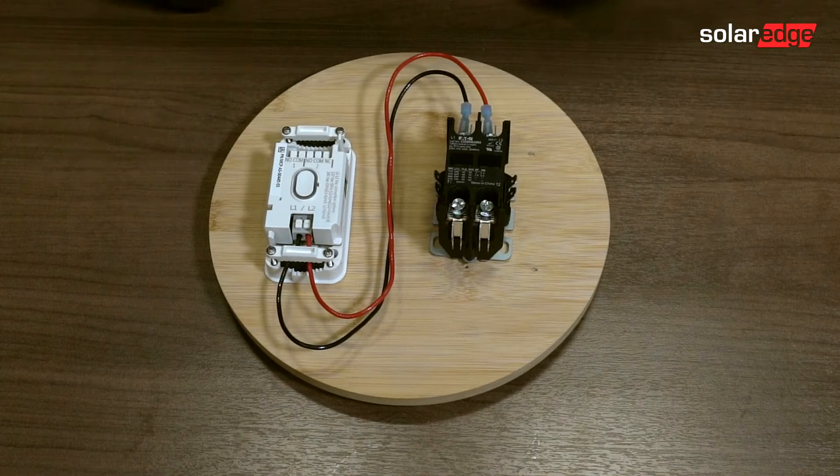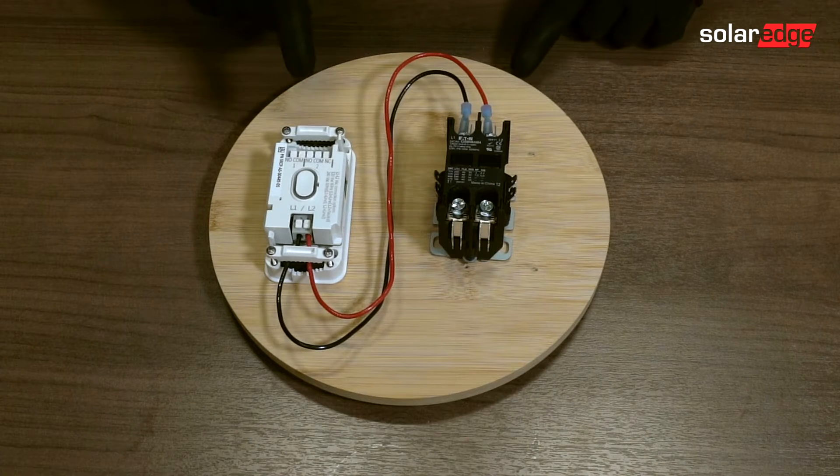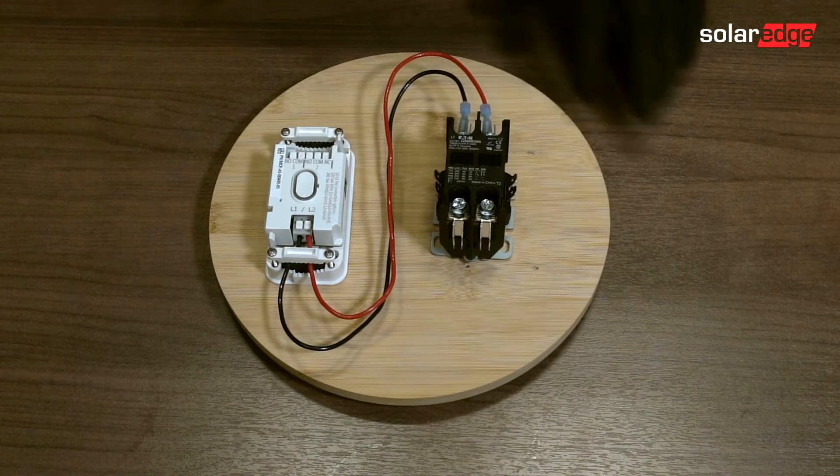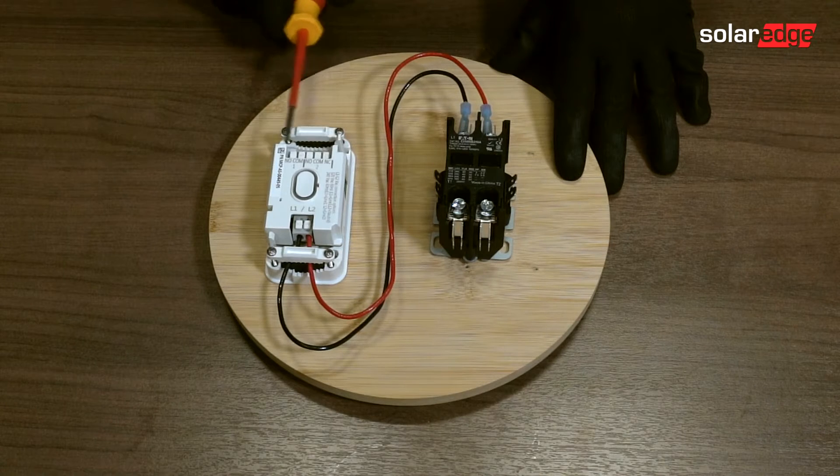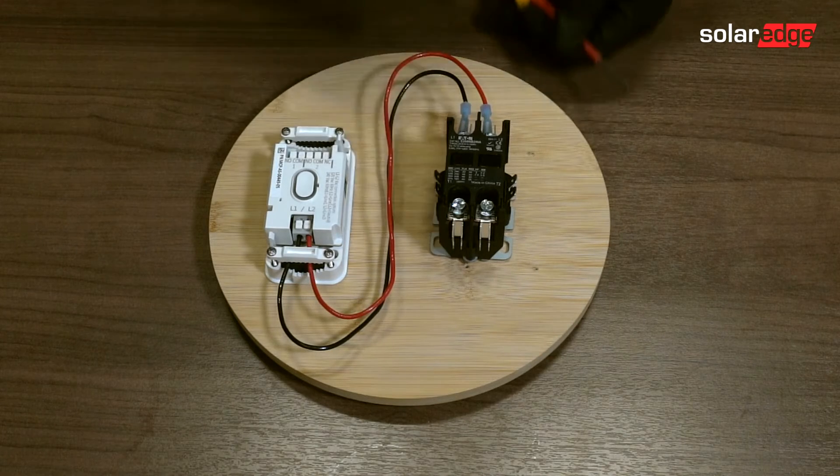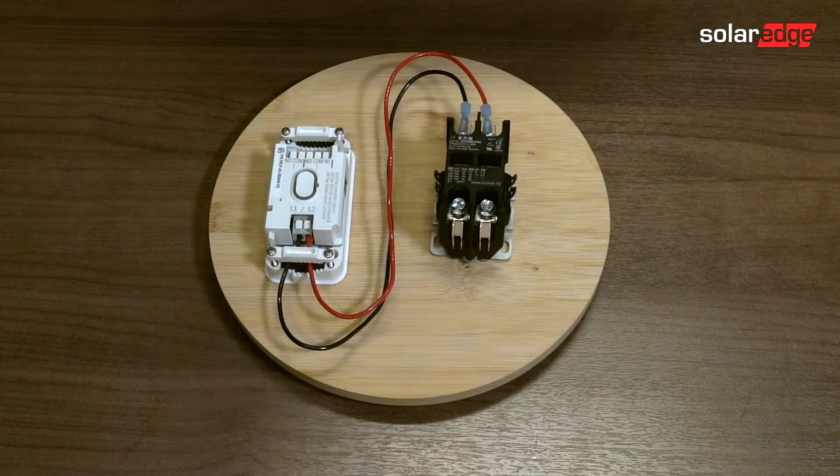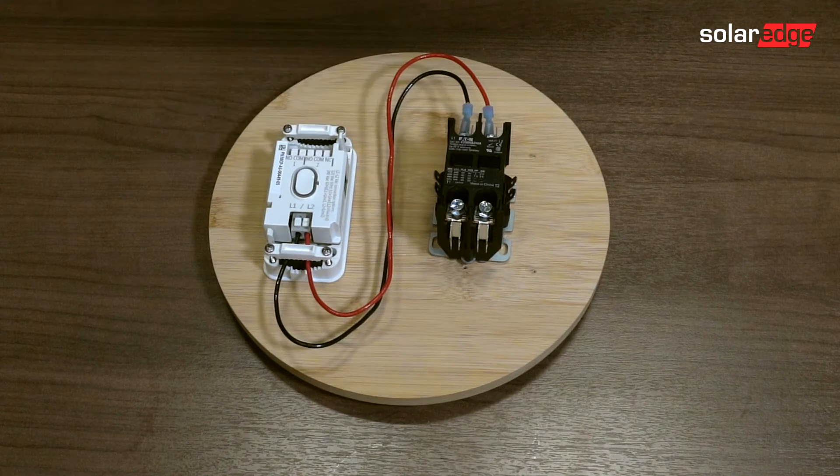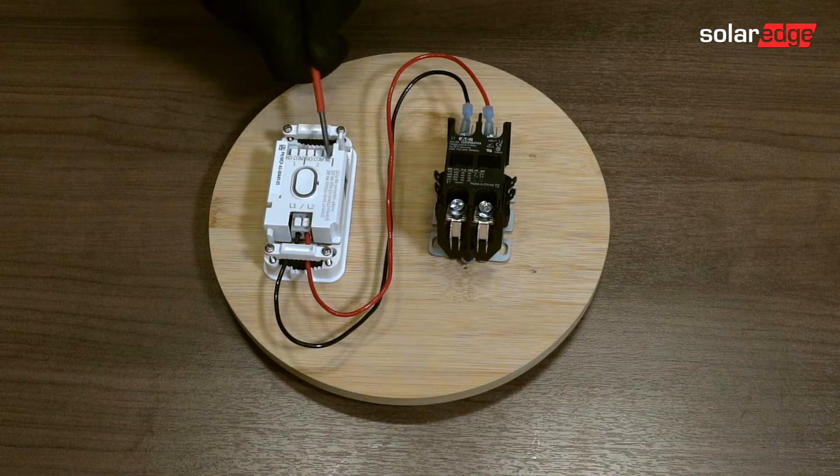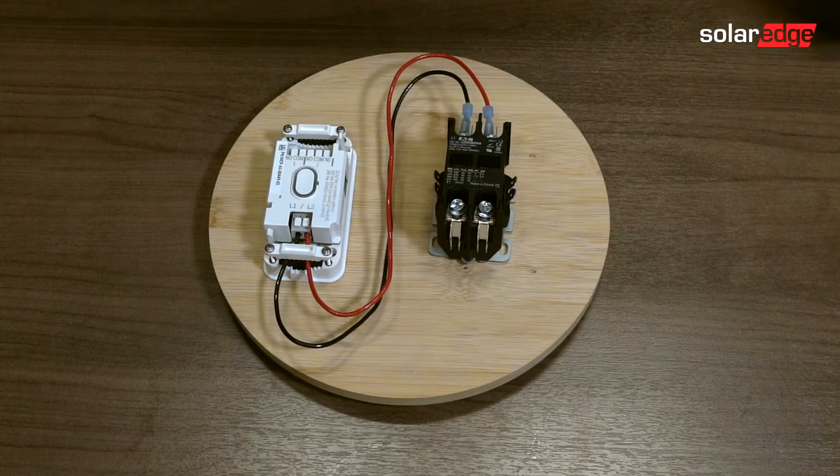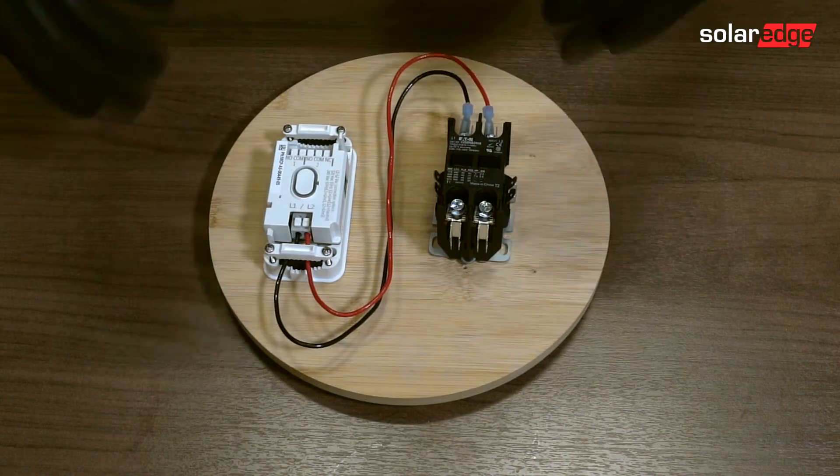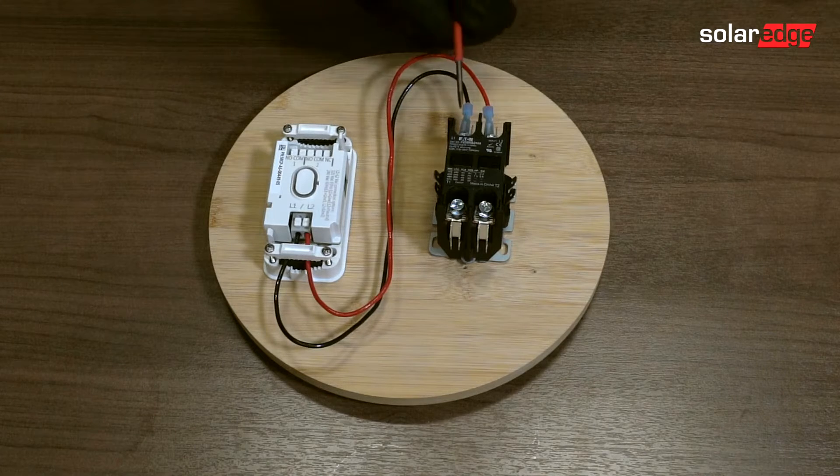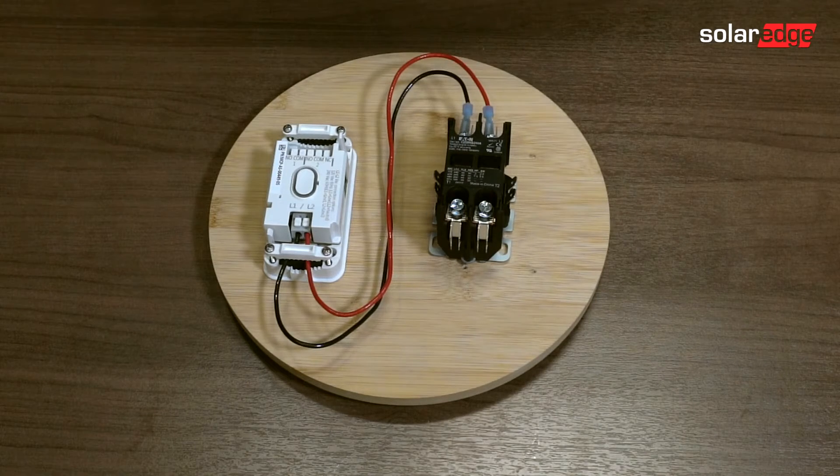Now we're going to wire our control. The common is going to be connected to line one and the normally open or the normally closed positions are going to be connected to the coil, and that's what controls the coil. So now we're going to wire the control side of the load controller to the contactor. The normally open or normally closed positions are going to be wired to the coil, and that's the state of the coil. Is it on or is it off? Is it open or closed? And the common is going to be wired as a voltage reference and is going to be wired to the supply side of the load controller.